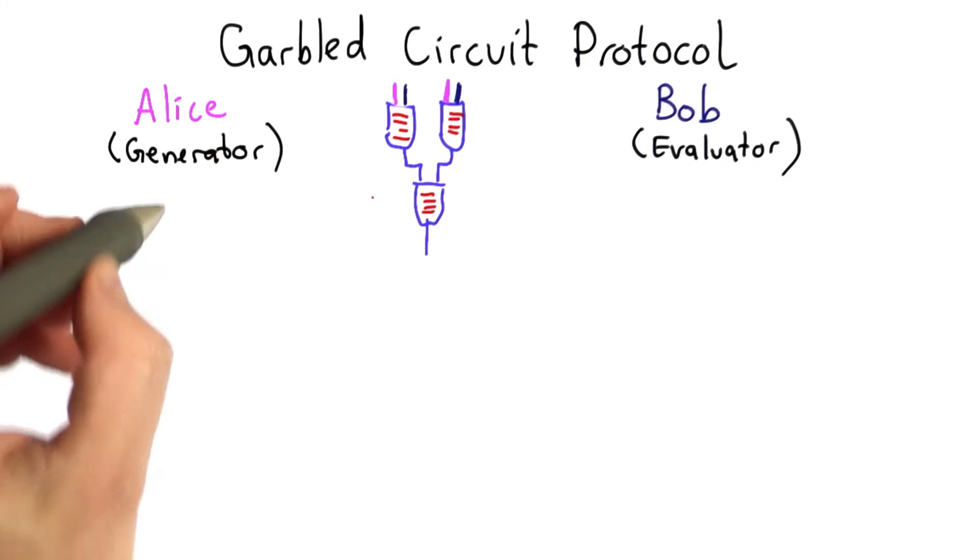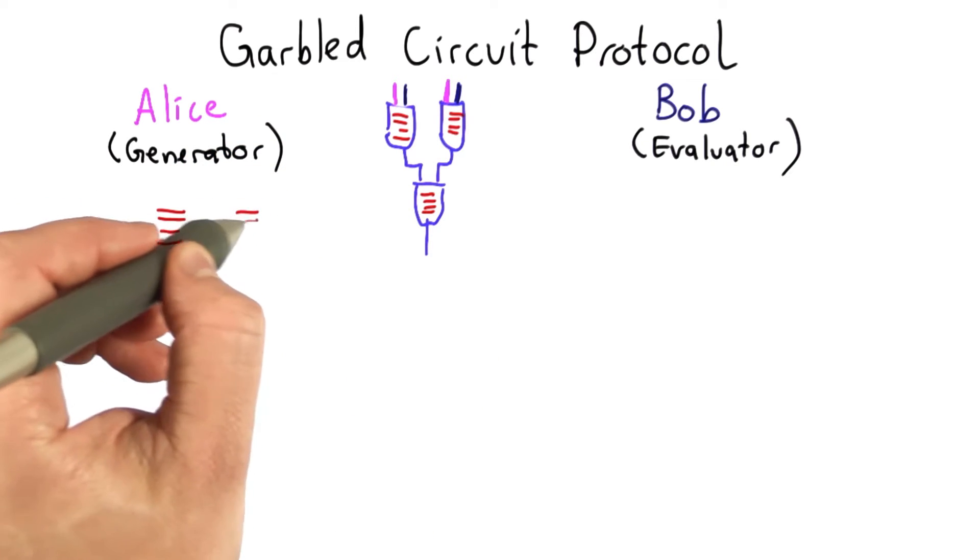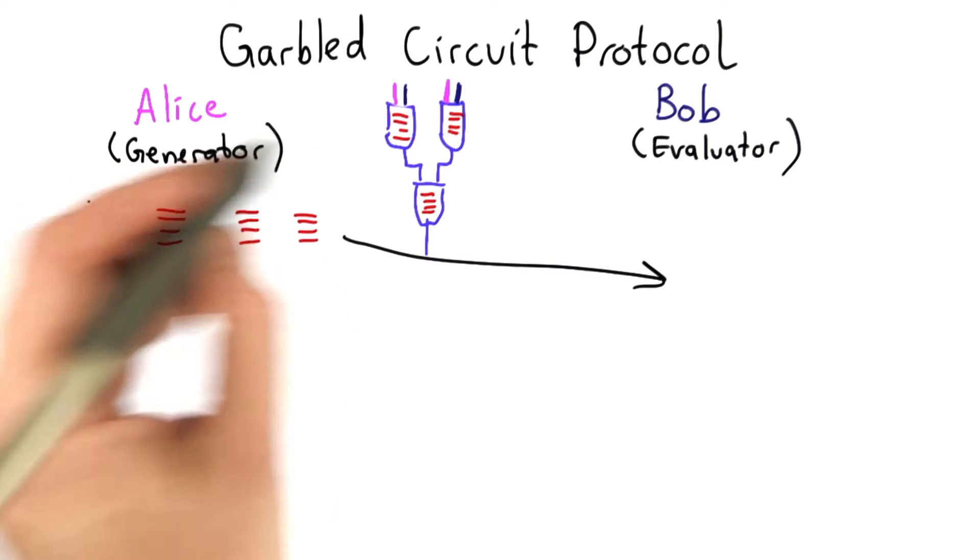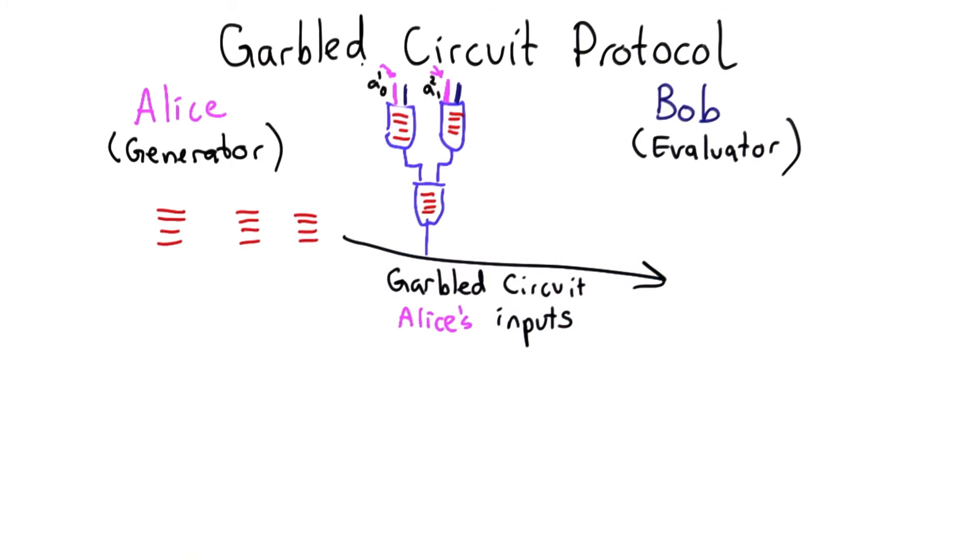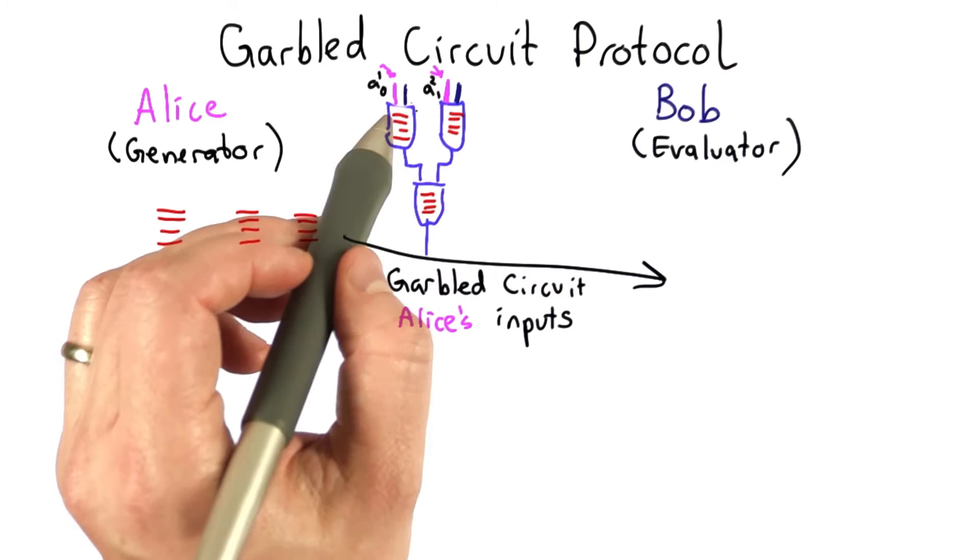Alice is going to generate a garbled table for each one of these logic gates in the circuit, and send the garbled circuit to Bob. She's also going to send her input values, but because they're random nonces, Bob can't tell what they mean.